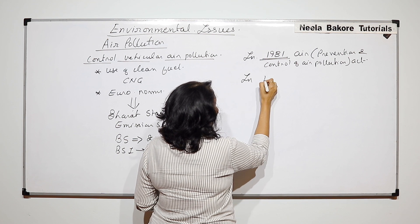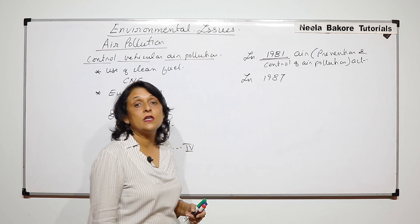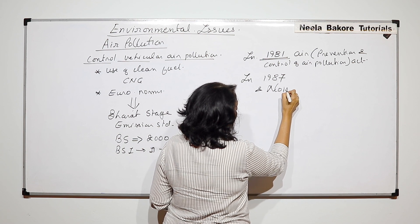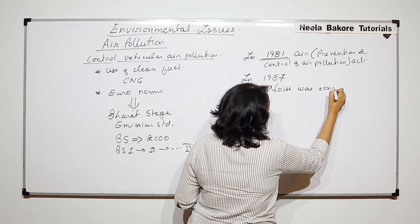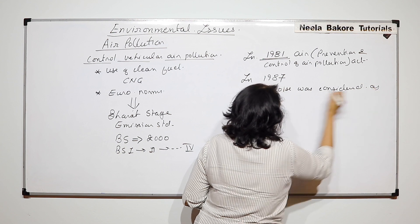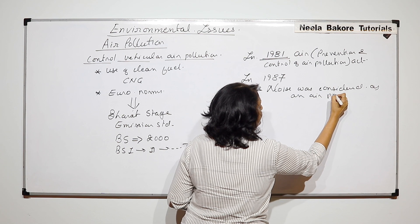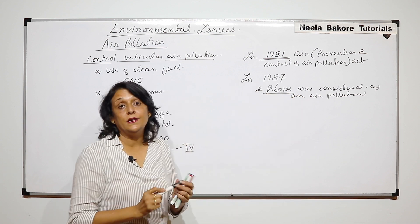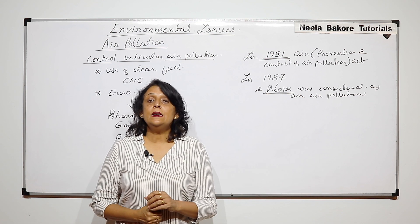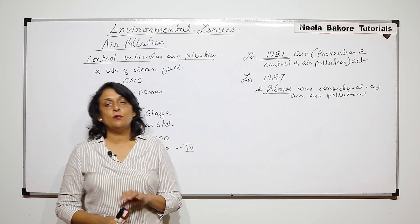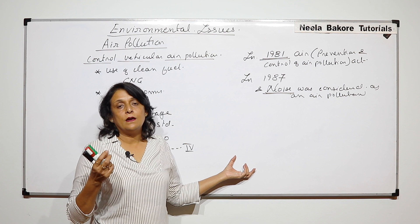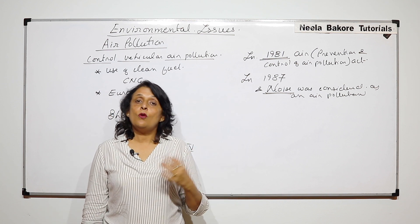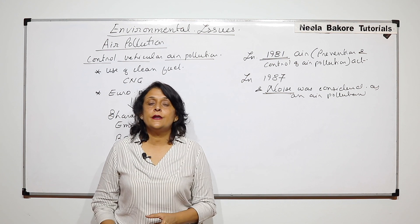In 1987 there was an amendment, and noise was considered as an air pollutant. Before that it was not in the list of air pollutants. When we made the list of air pollutants we had carbon monoxide, oxides of sulfur, PAN, and all those things — noise was not there. Now after 1987, noise is also considered as an air pollutant.